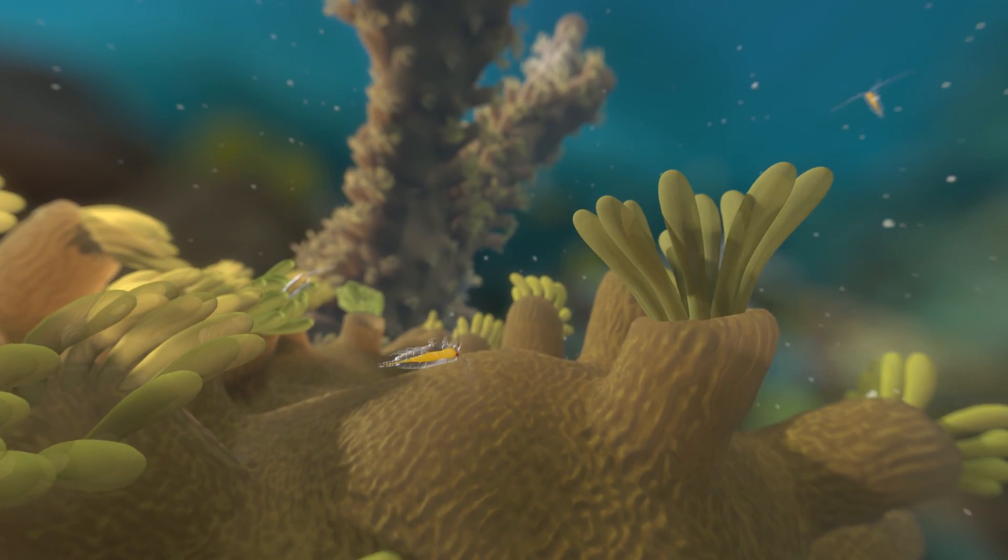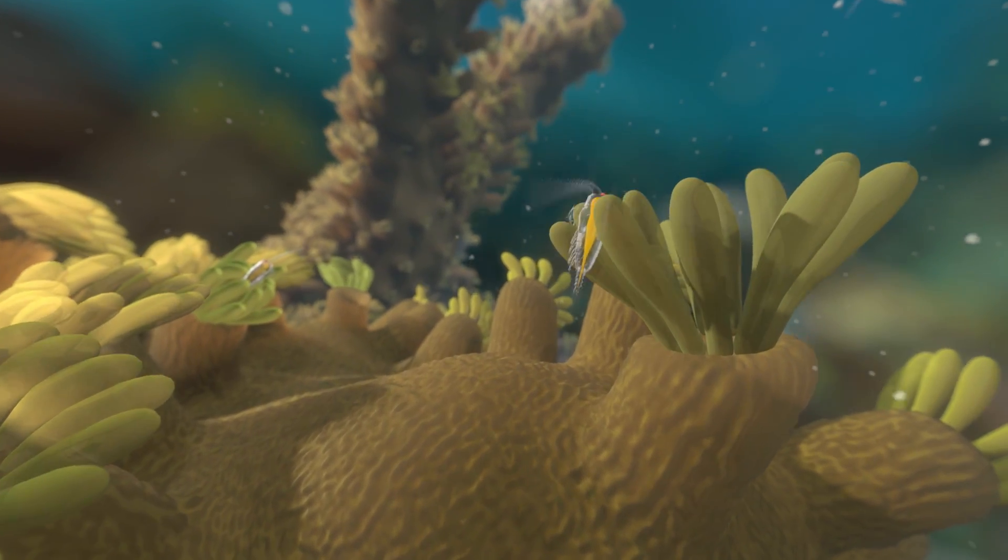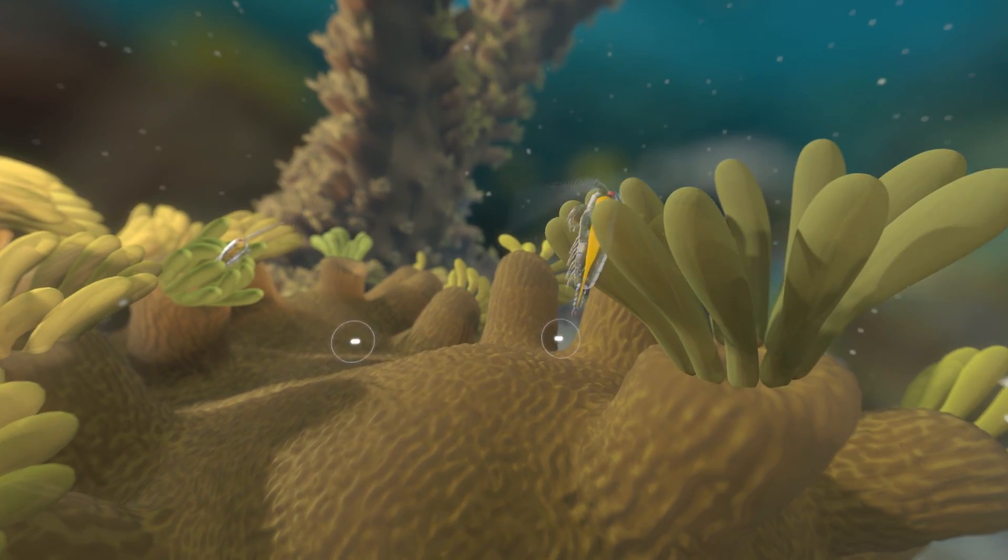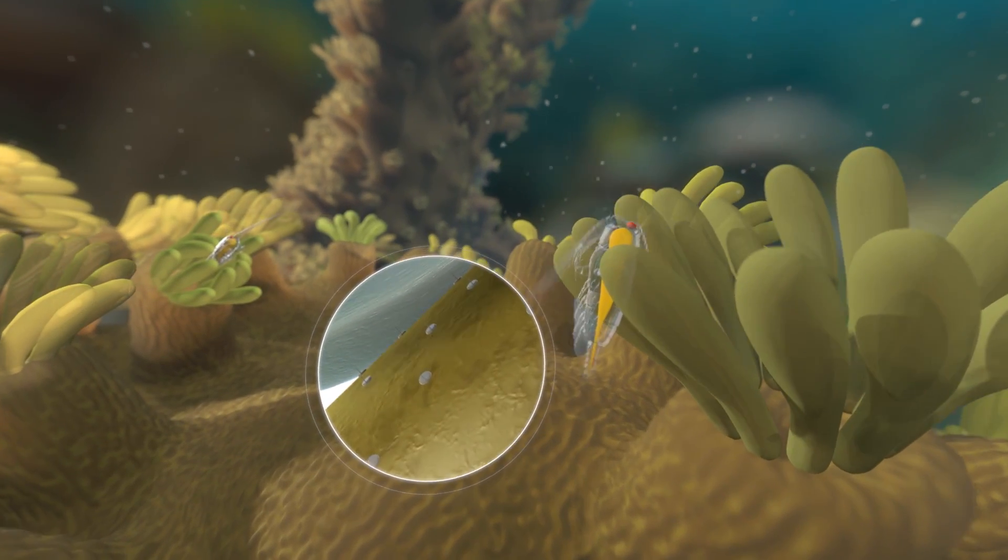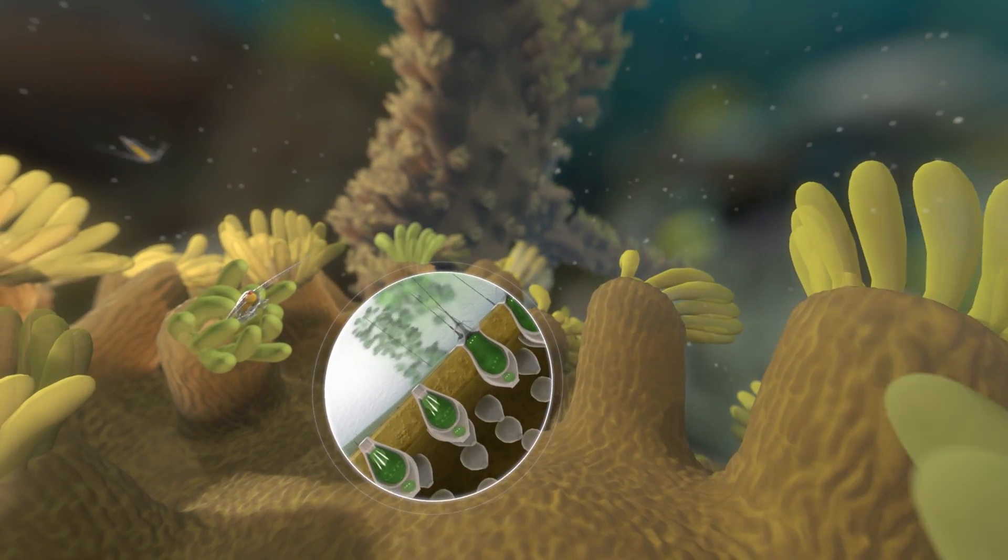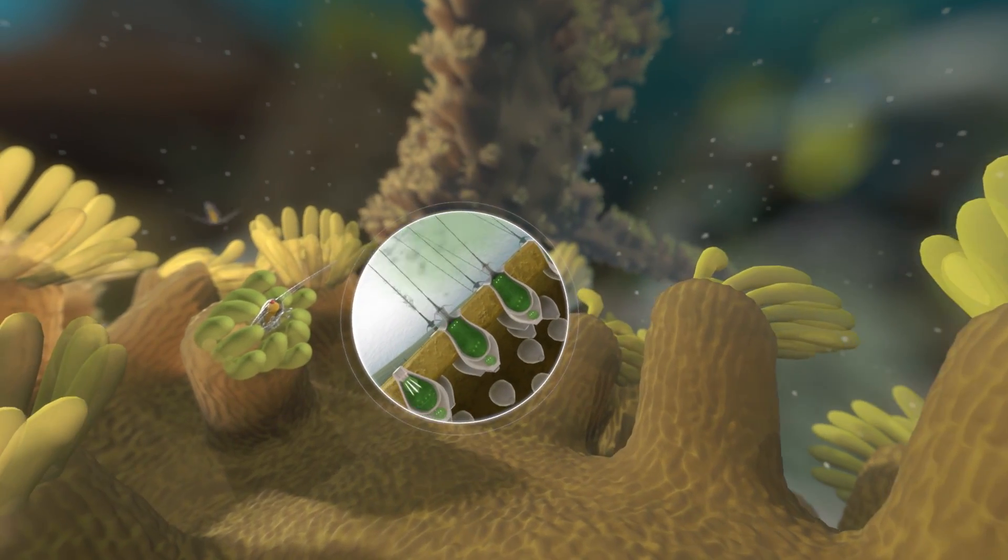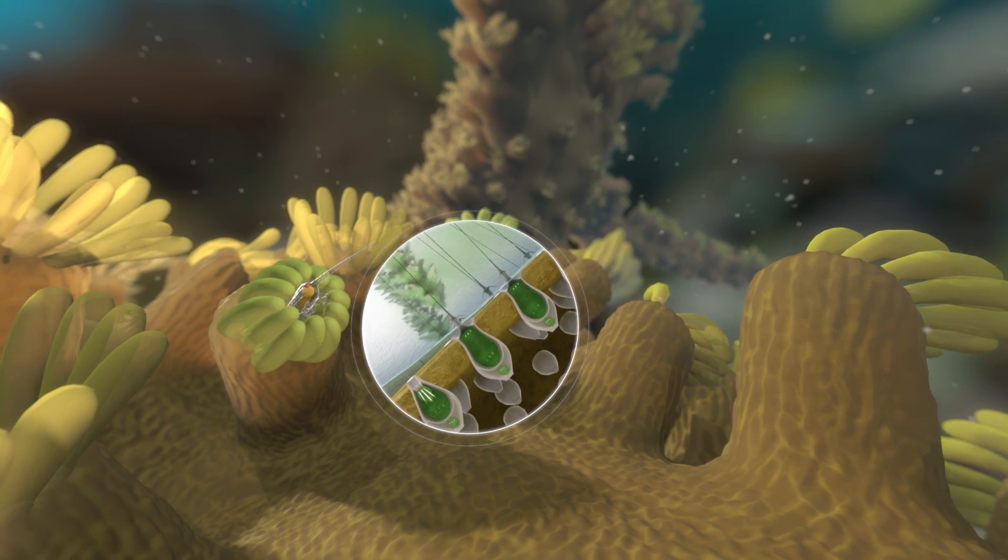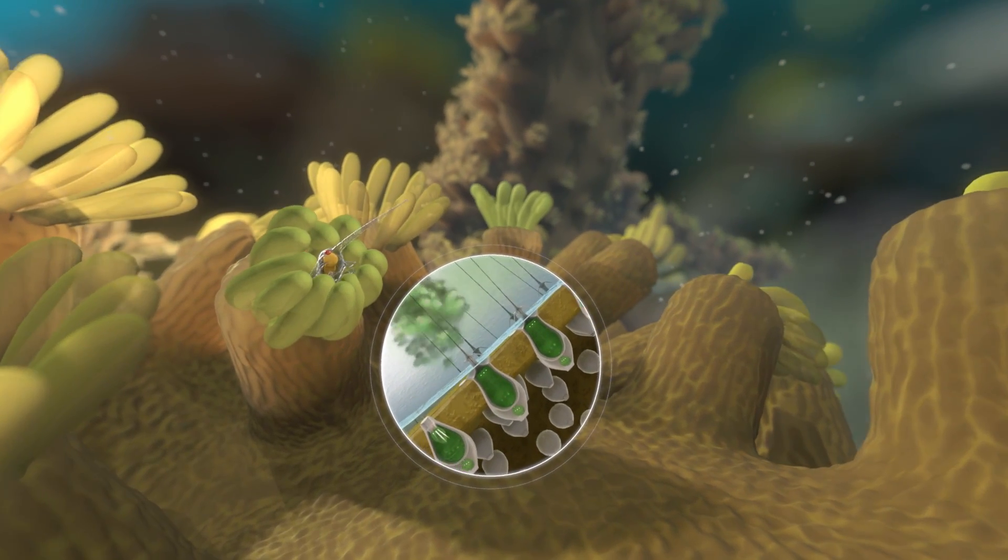Here a polyp captures its prey. Similar to the sting of its relative, the jellyfish, the coral harpoons its meal with microscopic hooks released from its tentacle. The polyp then draws the copepod into its mouth to digest.